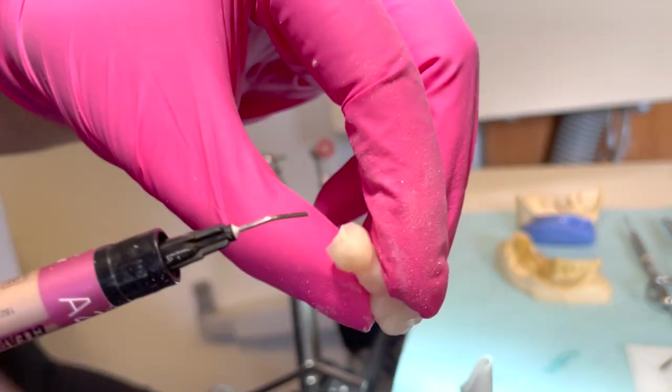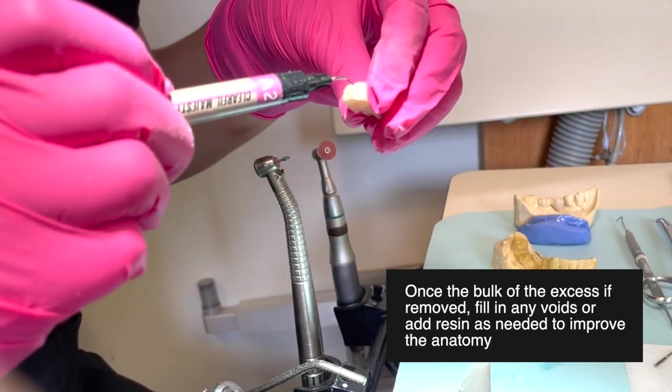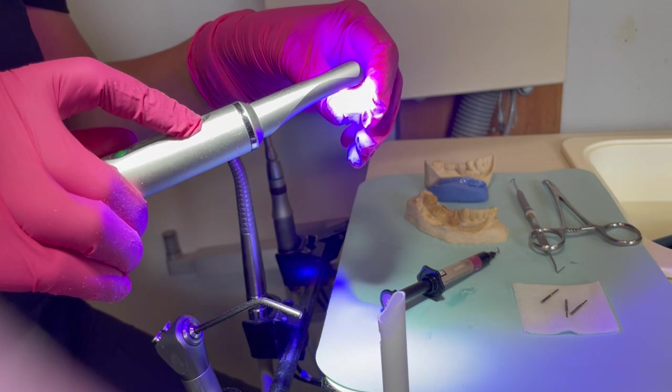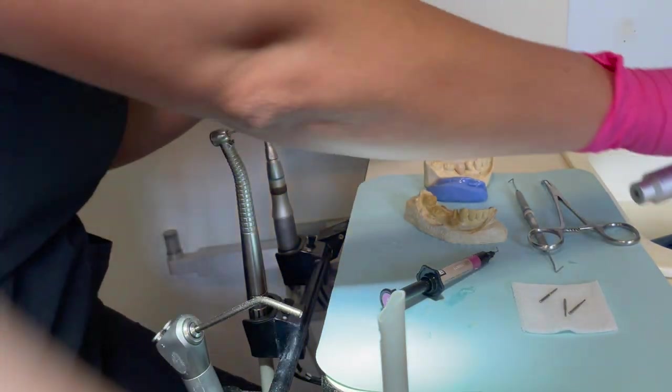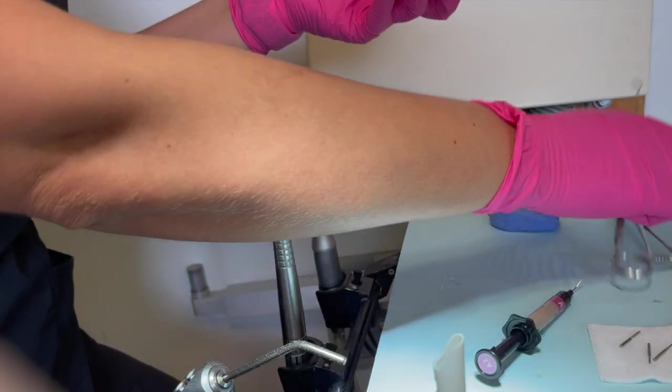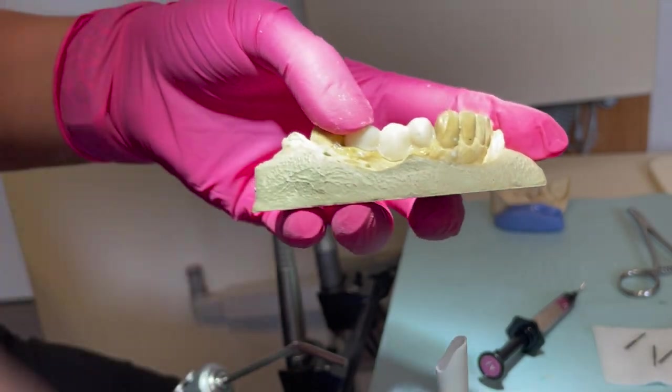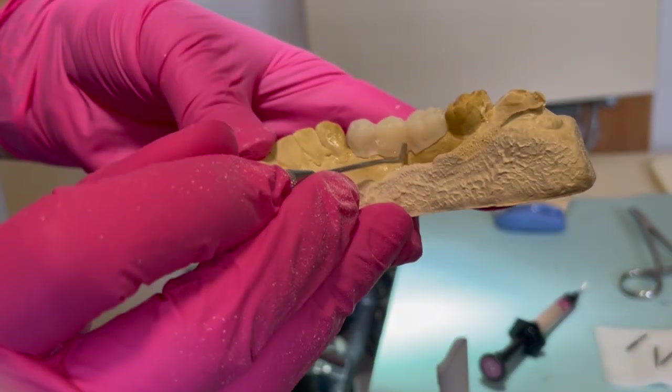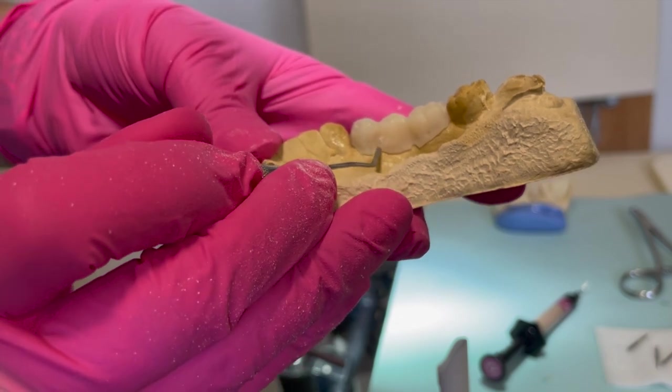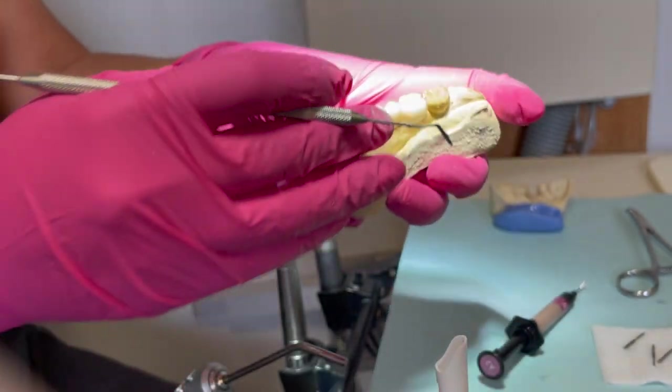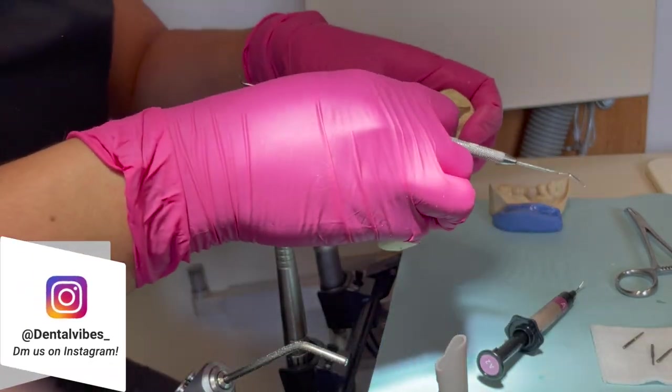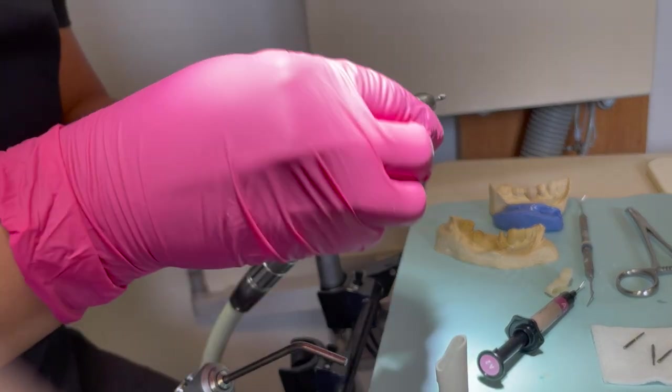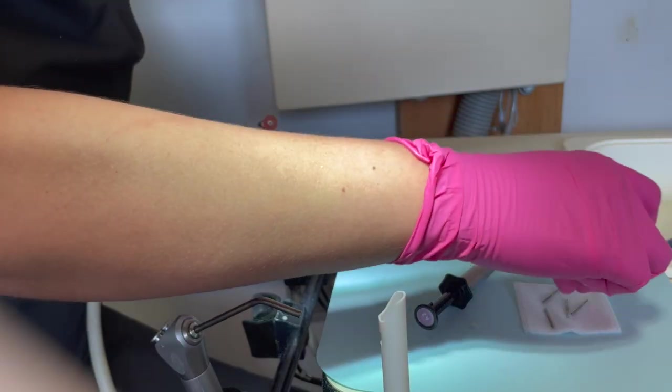Once I'm pretty much done with removing the bulk of the acrylic, I start looking for any defects such as voids or if I need to add resin to improve the anatomy. This would be the time that I start doing that before doing the final touches. Make sure to also try in the temporary on the teeth a few times before you finish trimming it. You can see if you need to open the embrasures more, how the contact is looking, how the margins are. You don't want to fully trim your temporary and then try it in because you'll be surprised how many changes you may need.